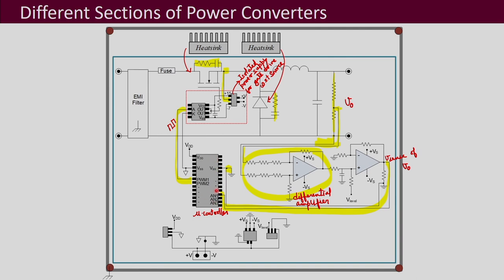This microcontroller forms a closed-loop control. It reads the sensed voltage through an analog input using its built-in ADC (analog to digital converter). You can program the desired output reference and implement different types of controllers inside the microcontroller. It performs comparison with the reference and generates the PWM output, which goes through the gate driver circuit to drive the MOSFET.